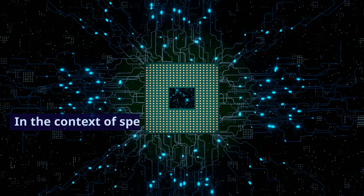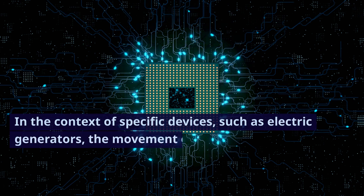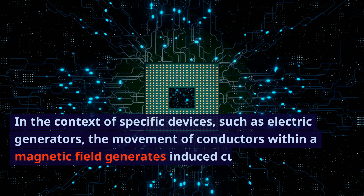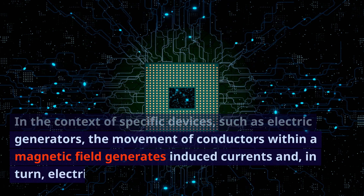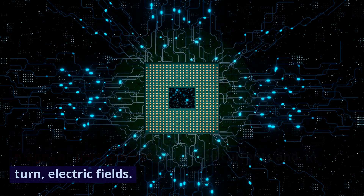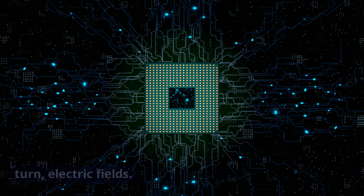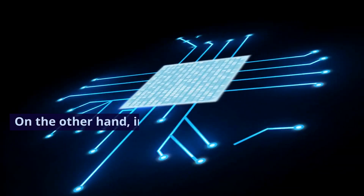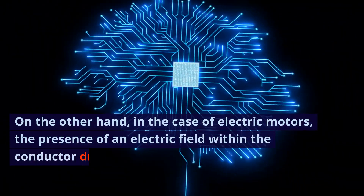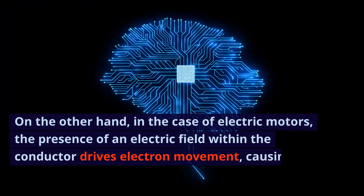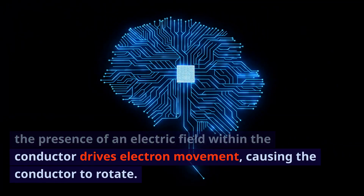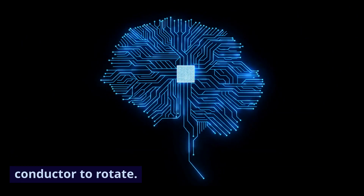In the context of specific devices, such as electric generators, the movement of conductors within a magnetic field generates induced currents and, in turn, electric fields. On the other hand, in the case of electric motors, the presence of an electric field within the conductor drives electron movement, causing the conductor to rotate.